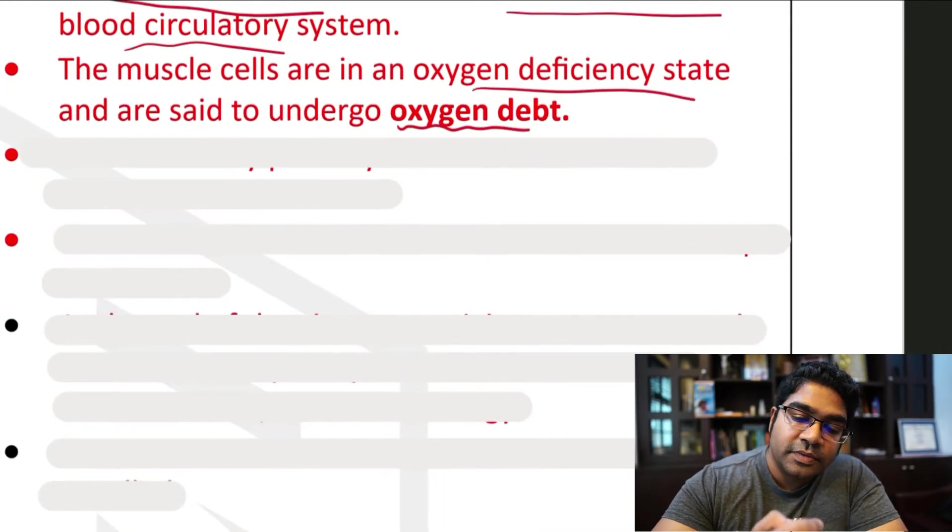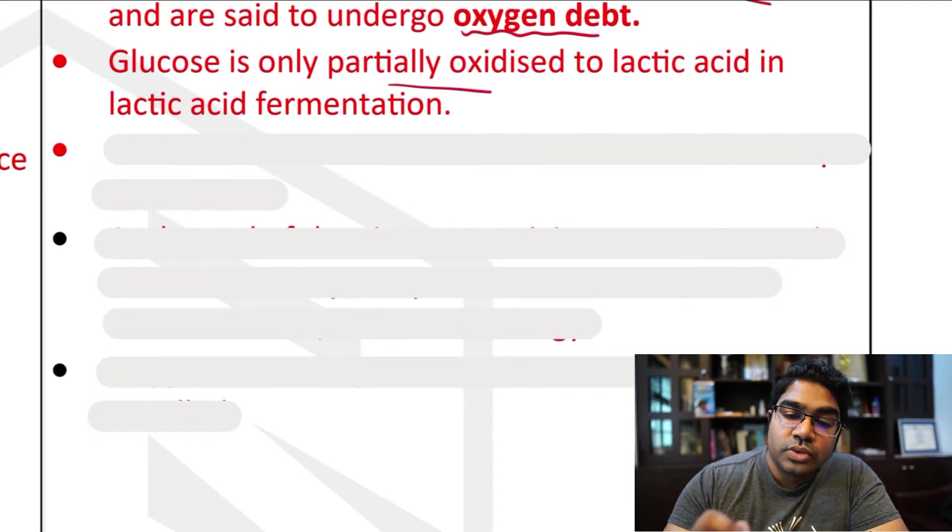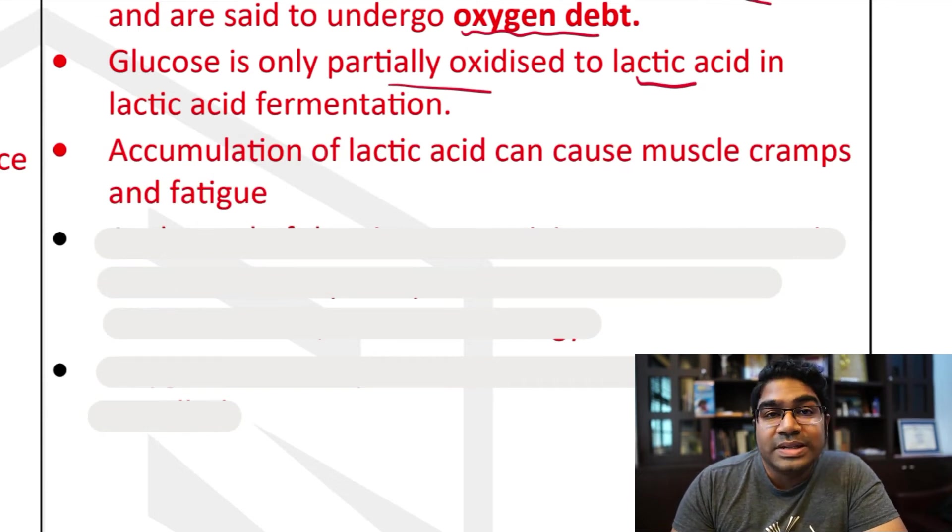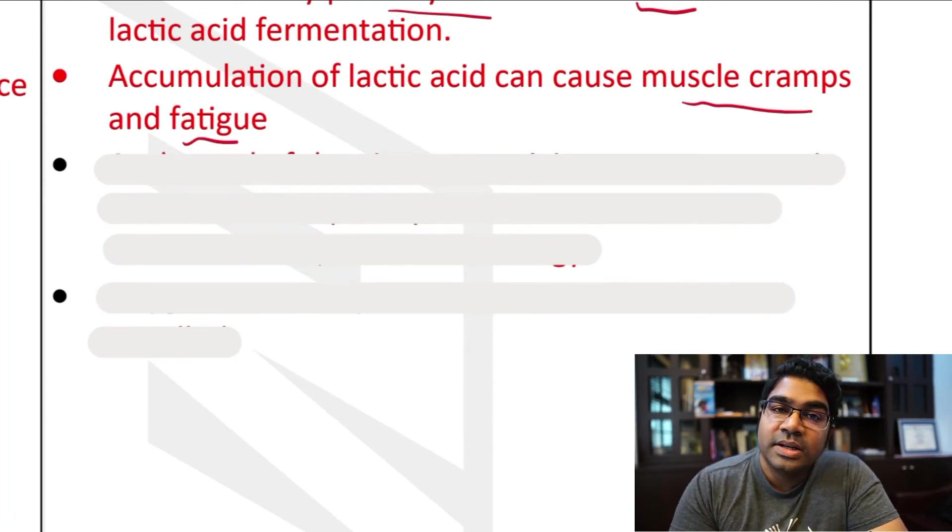So lactic acid fermentation: glucose is only partially oxidized to lactic acid, as we saw in the word equation earlier. And the accumulation of this lactic acid in the muscles is what causes muscle cramps and muscle fatigue.